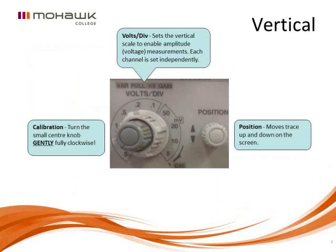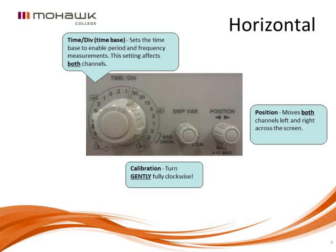The vertical control sets the volts per division. The actual settings will vary on the oscilloscope — for example, you might set it to one volt per division, which means one vertical square on the screen represents a change in voltage of one volt. The calibration knob in the center must be turned all the way clockwise; otherwise the display is uncalibrated and your readings will be incorrect.